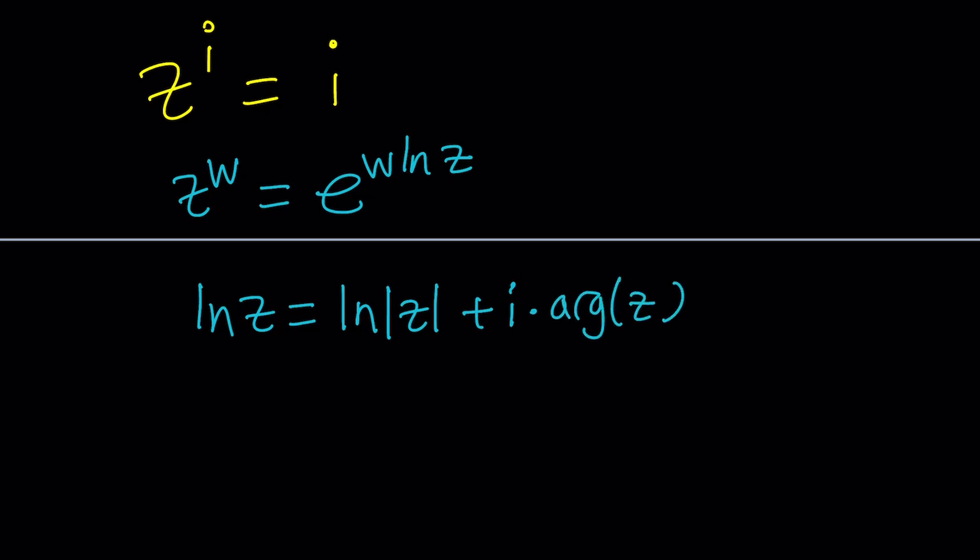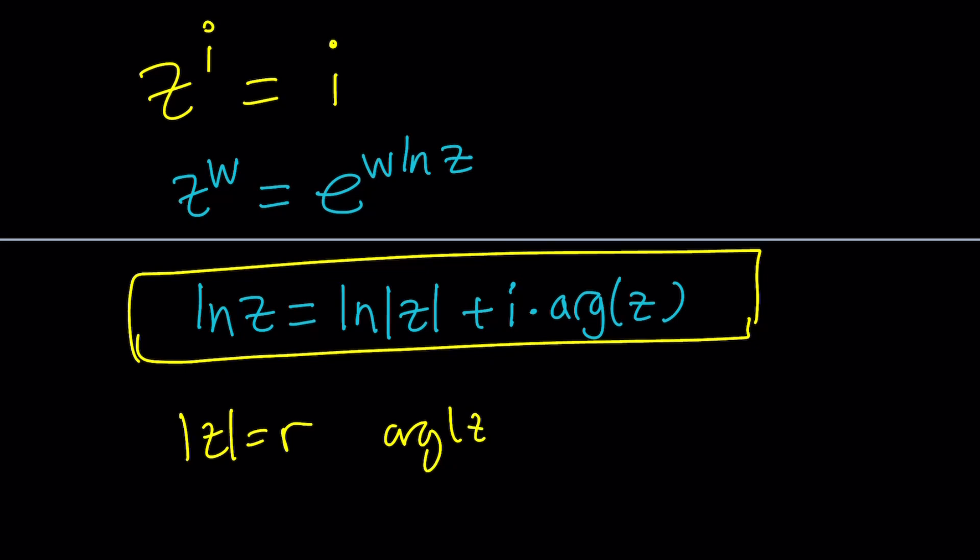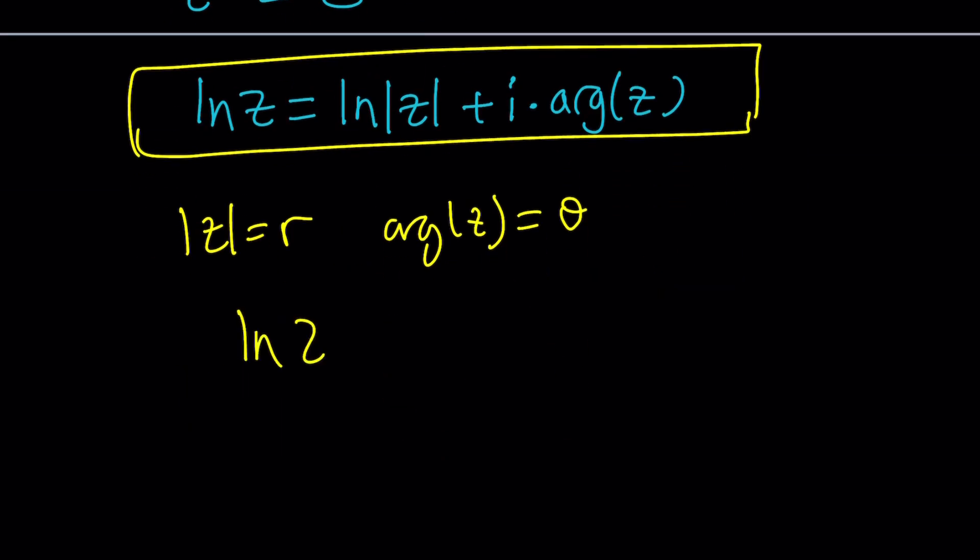This could probably be written in a different way if you just define the absolute value of z as r and the argument of z as theta then ln z can be written as ln r plus i theta which is kind of like a more compact form. Make sense? Great.